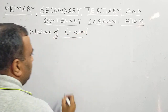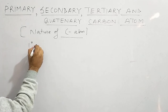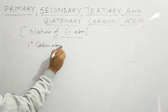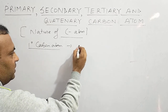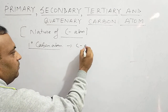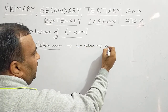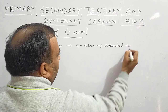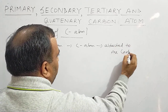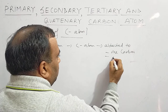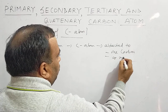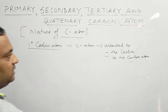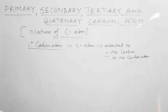First, let us look at the meaning of a primary carbon atom. A primary carbon atom is a carbon atom that is attached to one carbon atom or no carbon atom. Either condition qualifies it as a primary carbon atom.